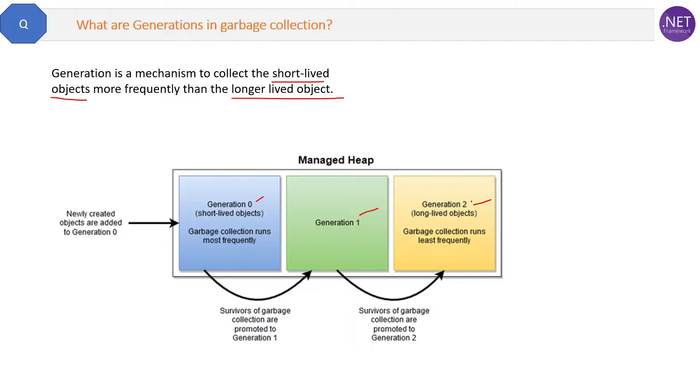So when the garbage collector runs, it will put newly created objects in Generation 0 here. The garbage collector will also check if there is any object already present in Generation 0, whether this object is still in use inside the application or is no longer required.